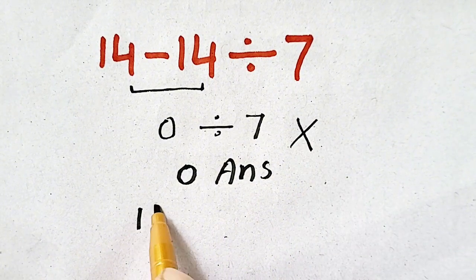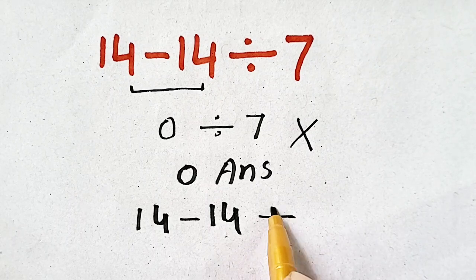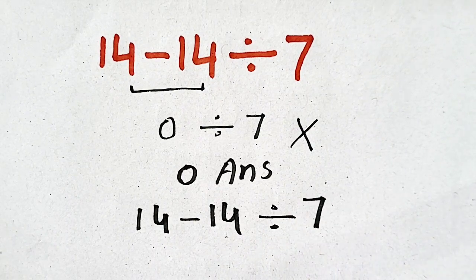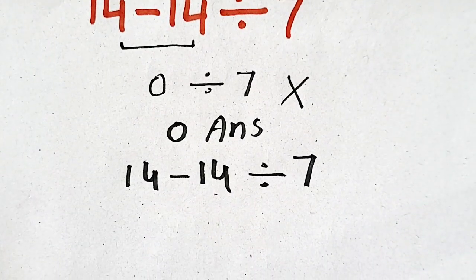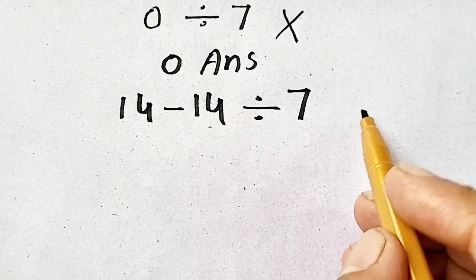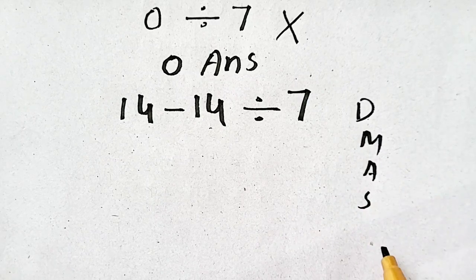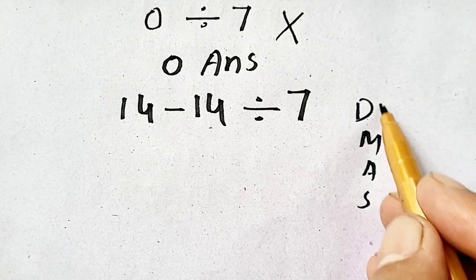Now again, we solve 14 minus 14 divided by 7 by obeying order of operations. According to DMAS, we have to solve division first.